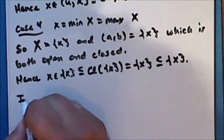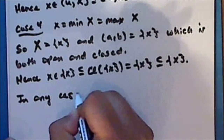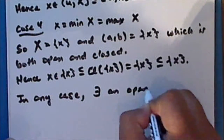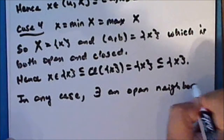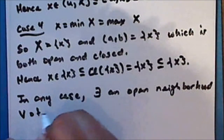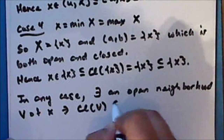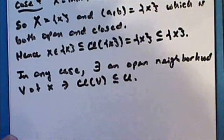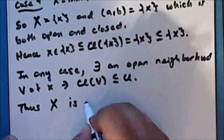In any case, there exists an open neighborhood V of the point x such that the closure of V is contained in the open neighborhood U. Thus the space X is regular.